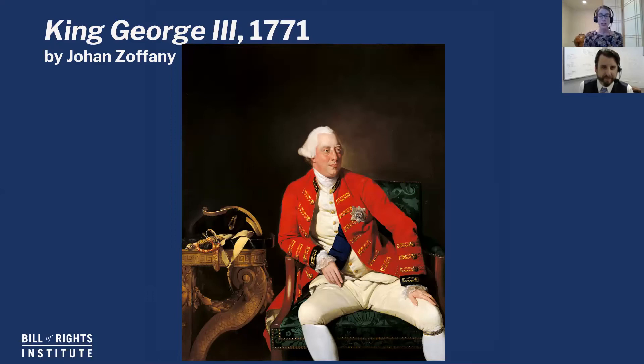Whenever you see a visual primary source, especially a painting — and especially a portrait — you really just want to look, observe, take in what you see, make some observations, and use those observations to start formulating questions. Right off the bat, from the title I know it's King George III, and one of my questions is: why isn't he wearing a crown? You're a king — that would seem like a dead giveaway — but he doesn't have one.